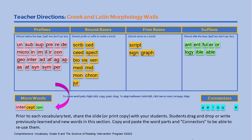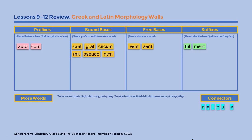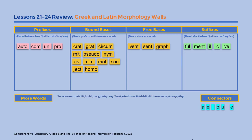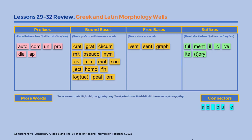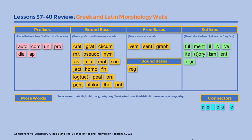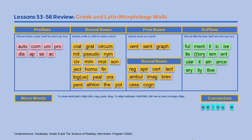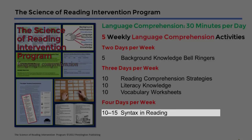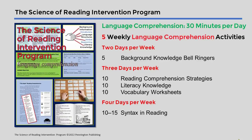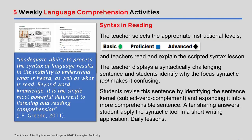For each set of four vocabulary worksheets, the teacher shares an interactive Greek and Latin morphology wall in Google Slides or print. Students drag and drop the morphemes they have learned to form multisyllabic academic words. The syntax in reading lessons apply the gradual release model of I do it, we do it, you do it.